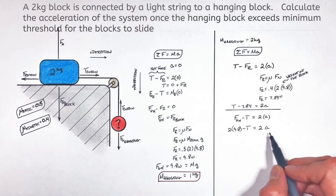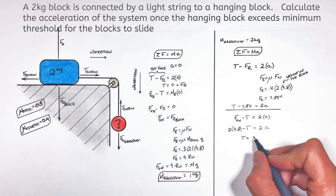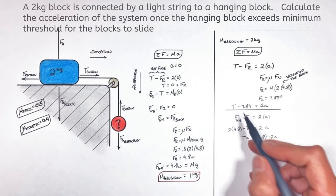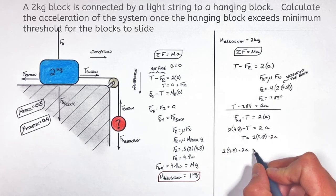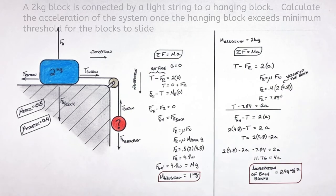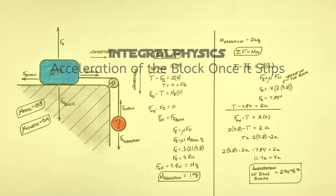So rearranging one of these equations for T and then substituting that equation in for T up here, we get the acceleration of both of the blocks is 2.94 meters per second squared. So again, I hope you found this useful and on that note, that's all for now.